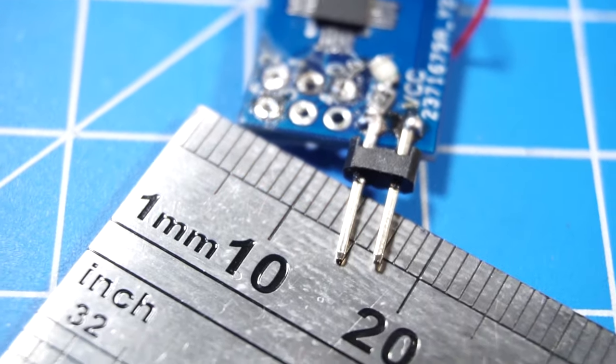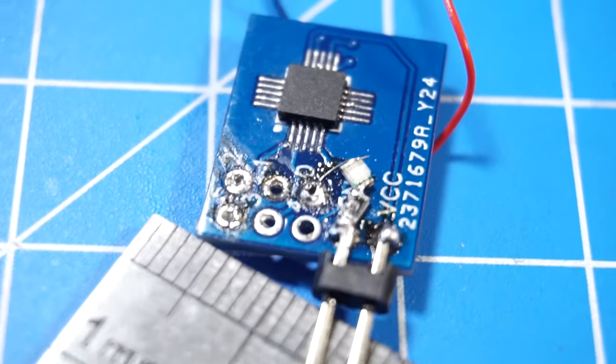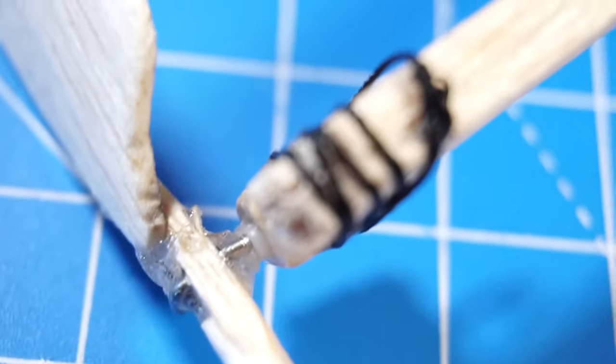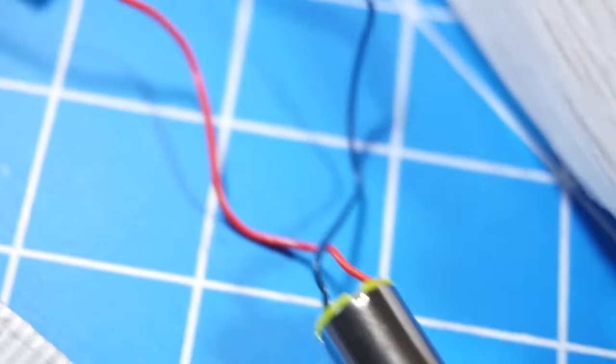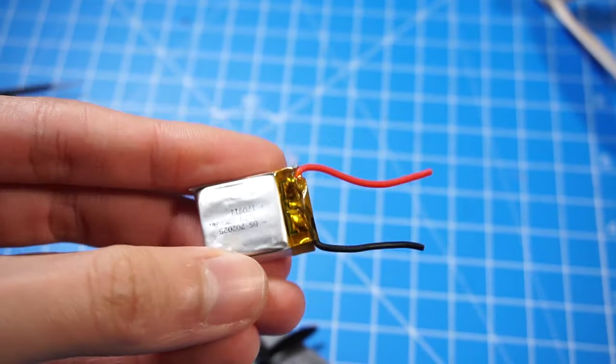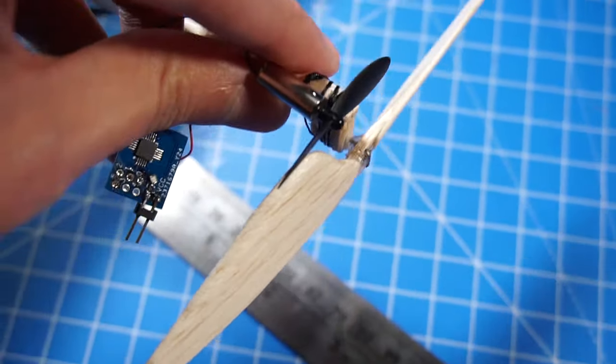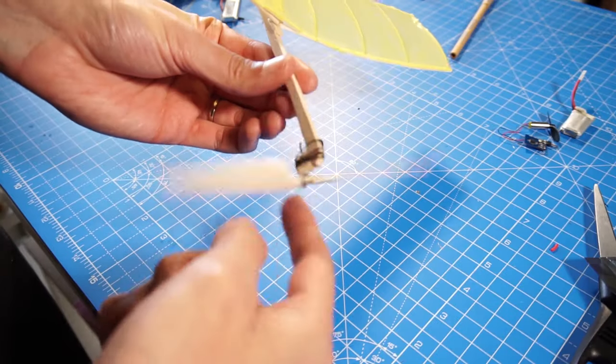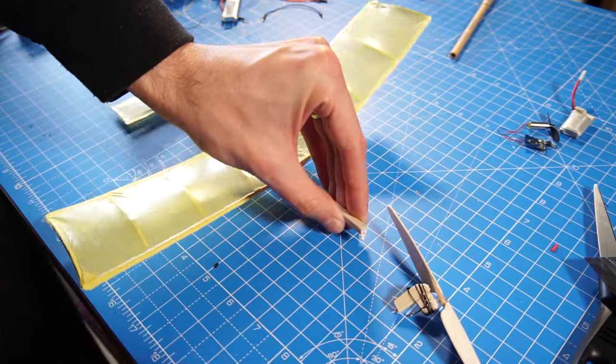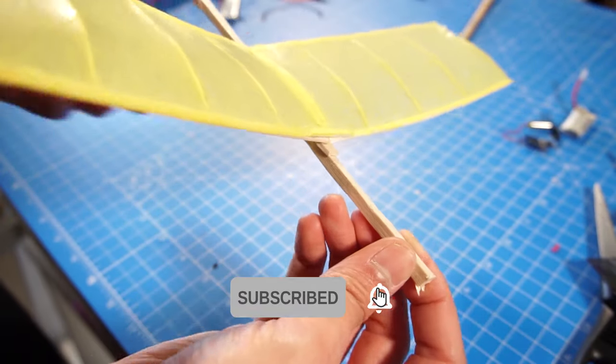The components we're going to be using are very small and lightweight which is perfect for this project because the airplanes we're going to fly are also very small and they have to be very lightweight otherwise they will struggle flying. The heaviest component we will use in this system is the battery but that's almost always the case.